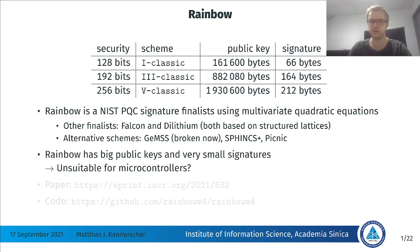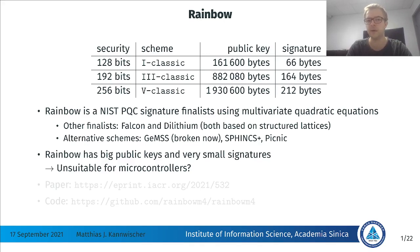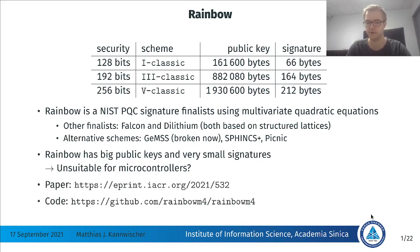All MQ schemes are famous for having big public keys and very small signatures. Due to the big public keys, it makes them very unsuitable for microcontrollers. For example, even the lower security level has public keys of 162 kilobytes, which might be too large for many microcontrollers. Nonetheless, we have looked into implementing Rainbow on the Cortex-M4, and our paper is available on preprint. Our code is completely open-source and available on GitHub, so please have a look and try it out.